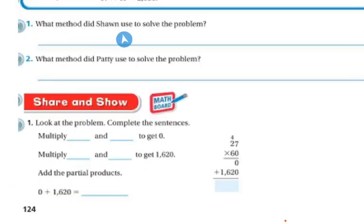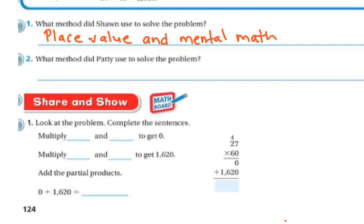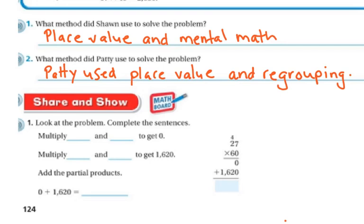Now, what method did Sean use to solve the problem? He used the place value and mental math by breaking apart the 60 and the 7. So that way he could do it more in his head. What method did Patty use to solve the problem? Patty used place value and regrouping.